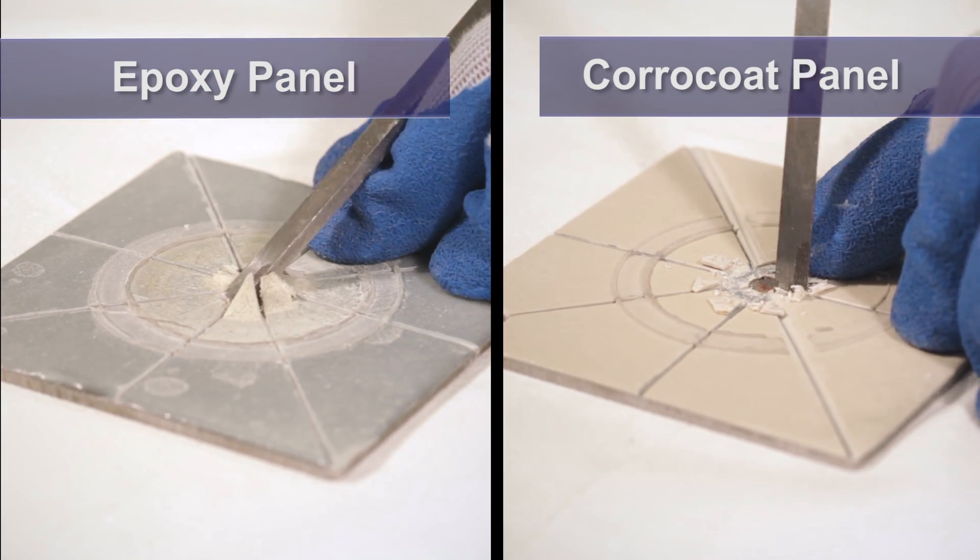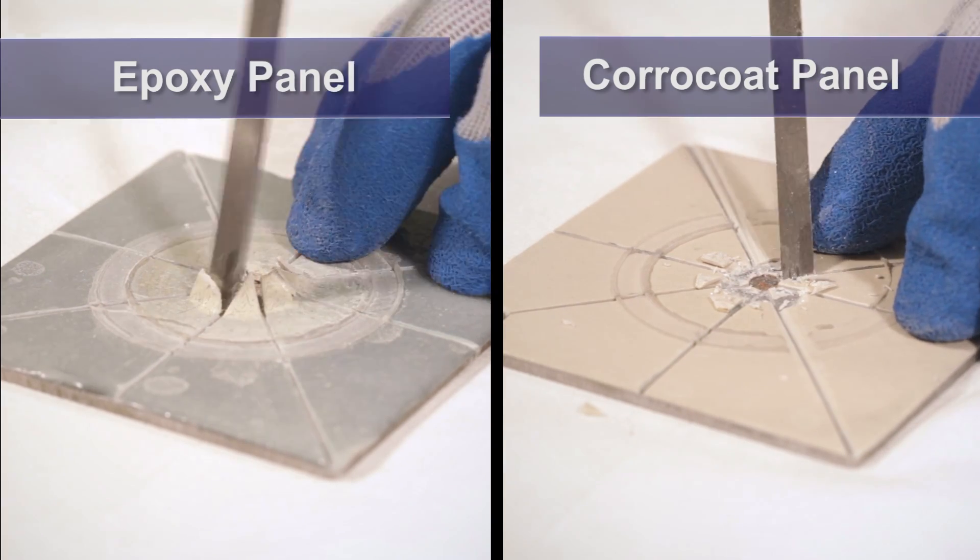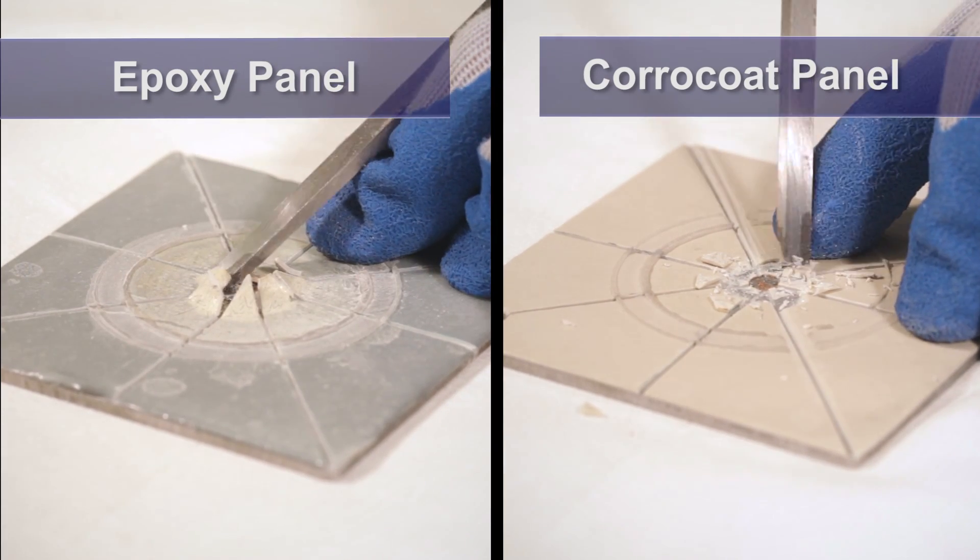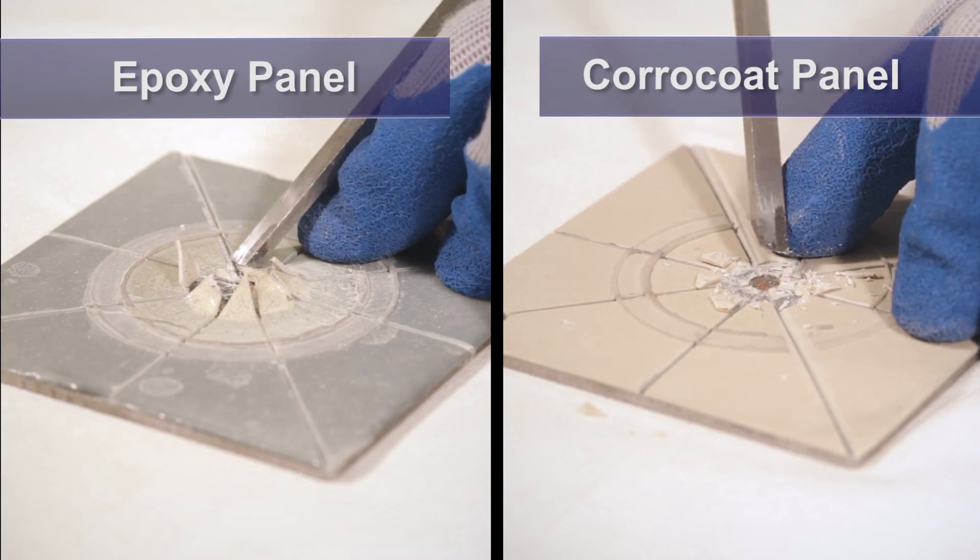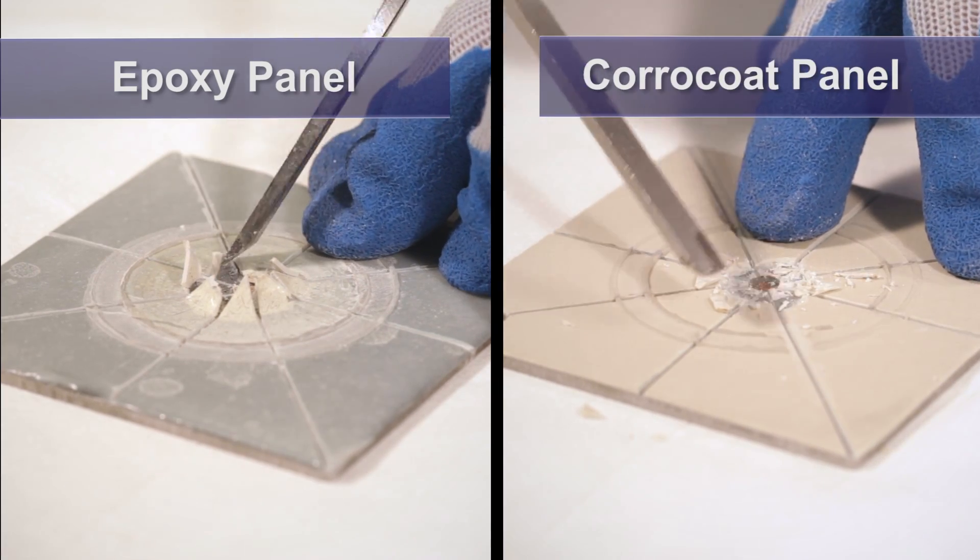As loss of adhesion is not always obvious, the substrate is carefully examined to determine if there are signs of residual coating which would indicate that disbonding has not occurred.